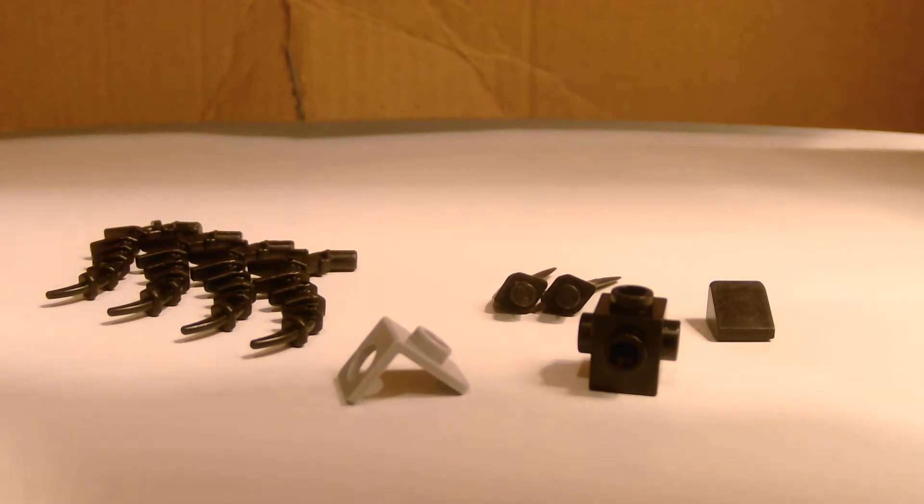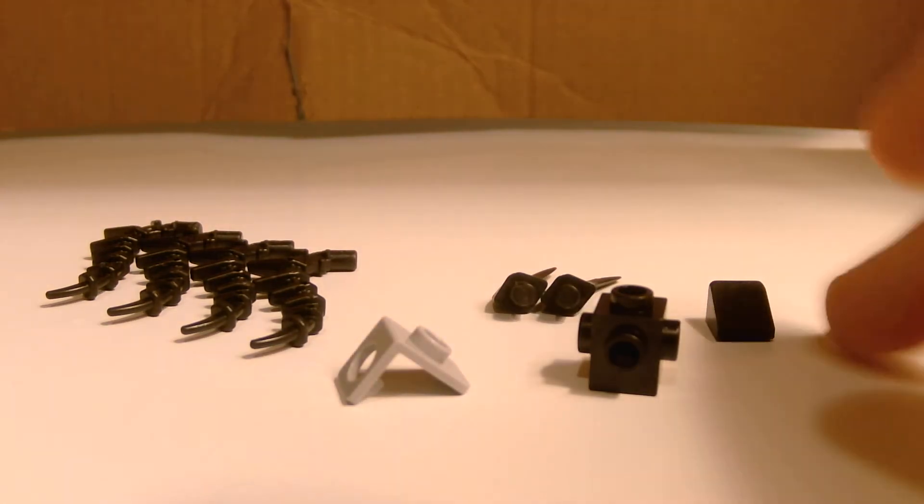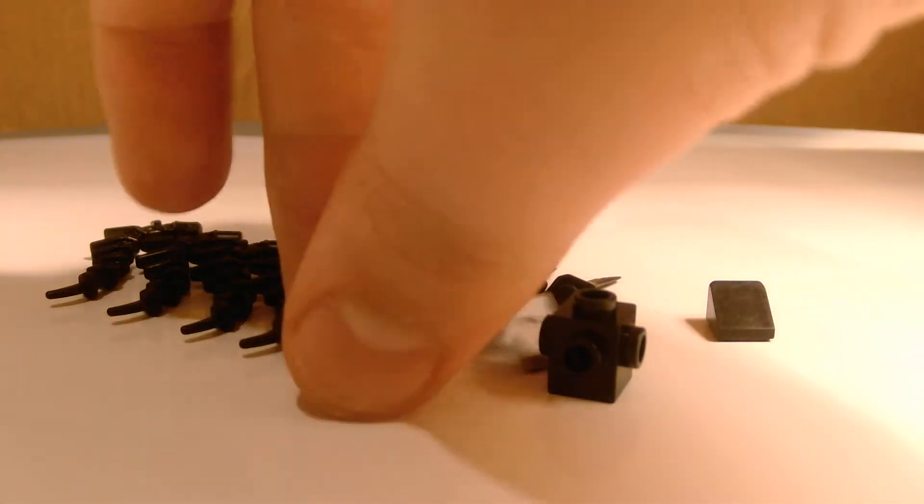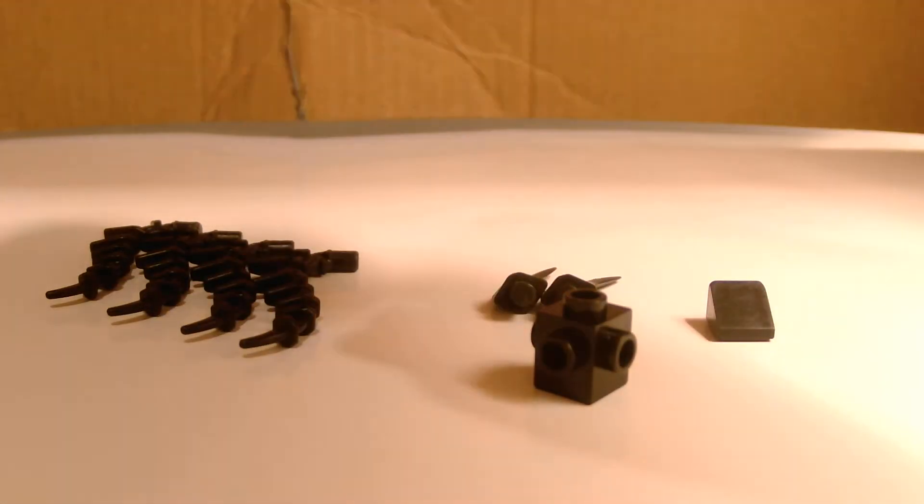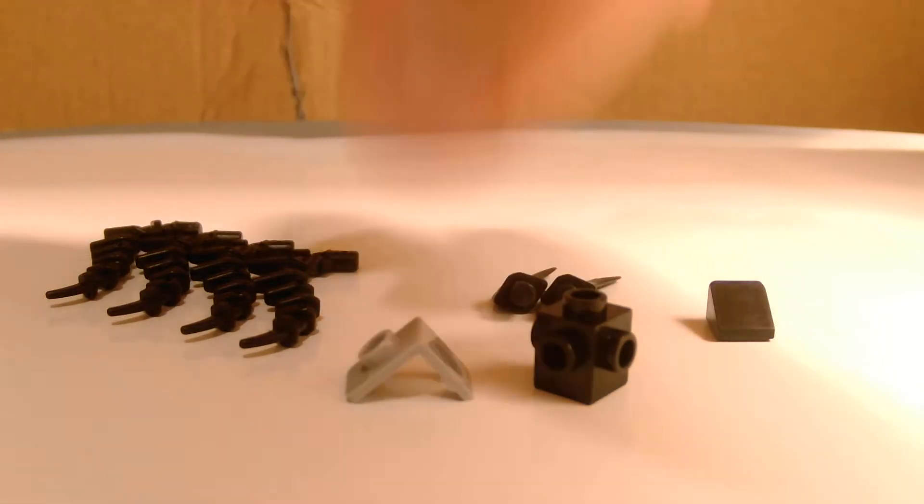To build this, you need four vine pieces. I don't know where I got them, but I believe they're pretty easy to find. And two claws, a black cheese slope, and one of these all-sided one-by-ones. And this piece, which is a neck attachment for minifigs with a stud. I believe you can get these in the Lego movie sets.